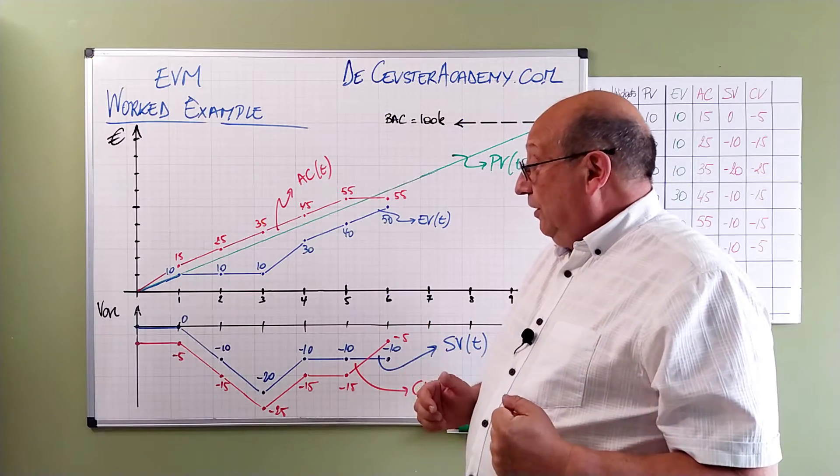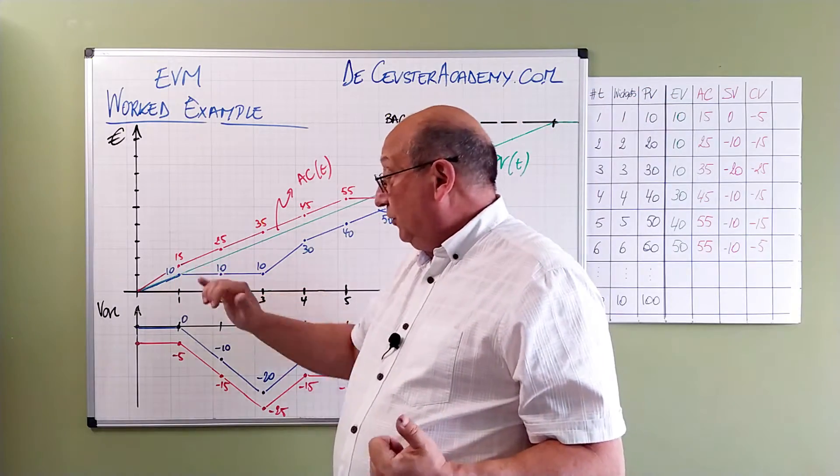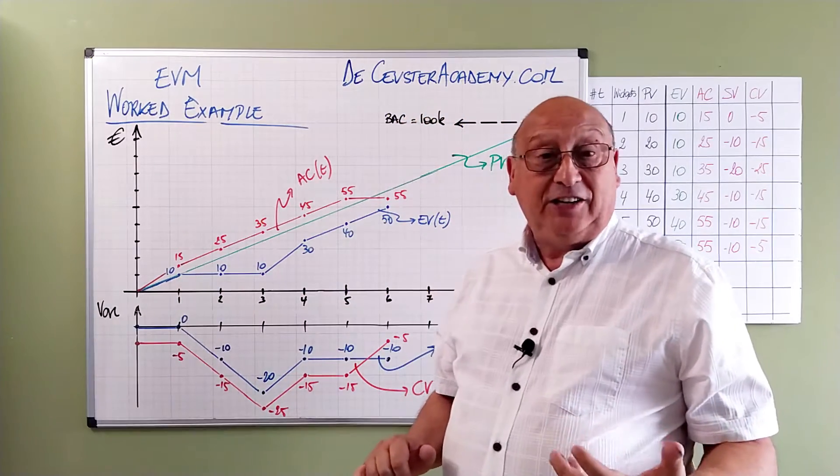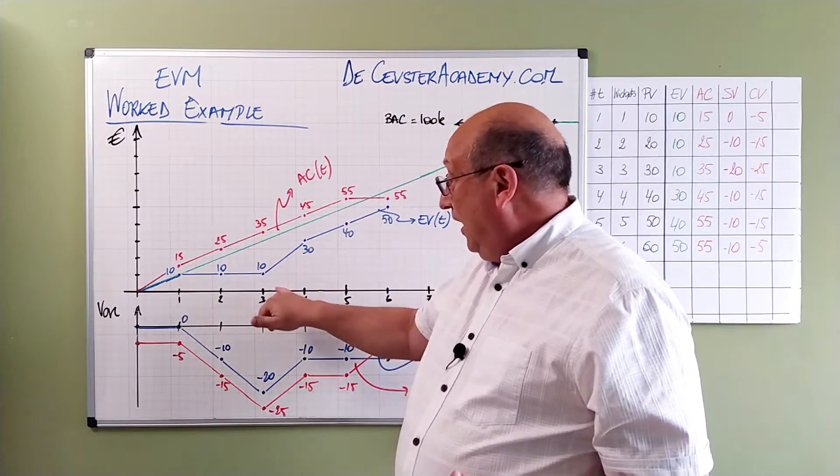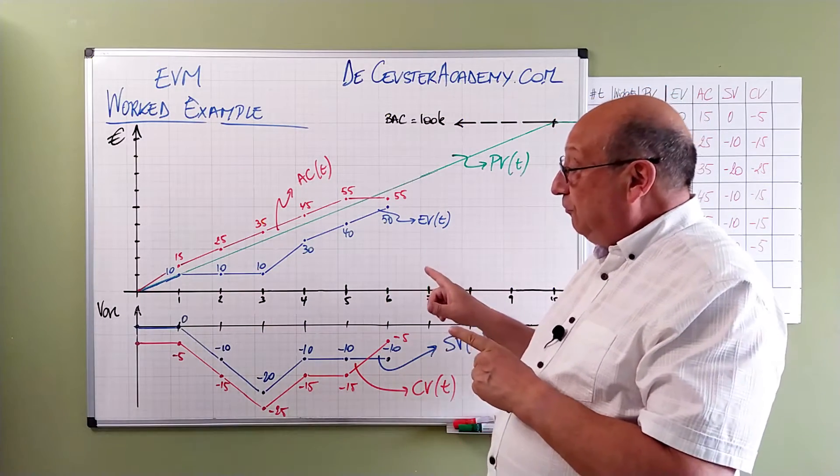With the actual cost it's a little bit different. In the first period we created the one widget but we spent 15k. For period 2, 25. For period 3, 35. 45, 55.